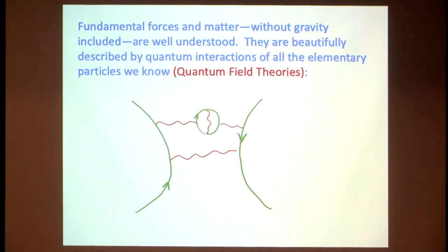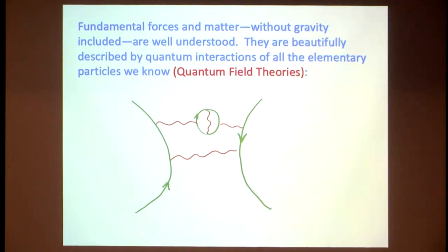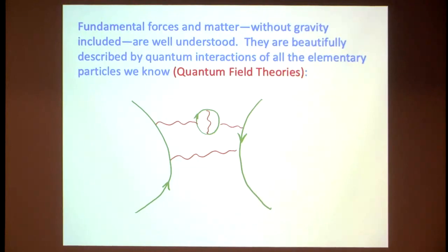If we talk about fundamental forces and matter and exclude gravity, we have a good understanding of it, including the fact that they should be described using quantum mechanics. We can have a nice, complete description of quantum theory mixed with particles and forces. These are captured by Feynman diagrams, which show particles moving around and exchanging mediators of forces like photons. This is very well understood — one of the major achievements of last century in theoretical physics.